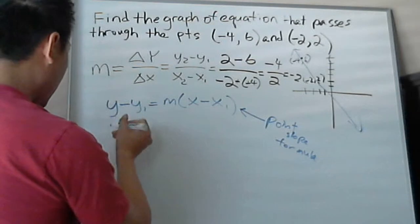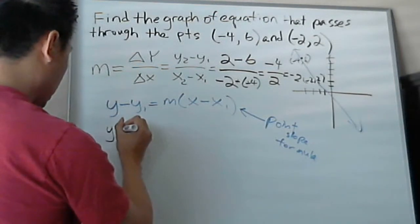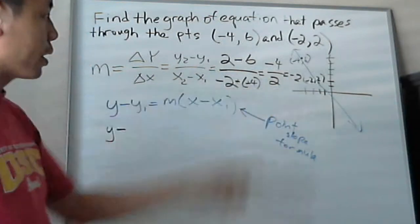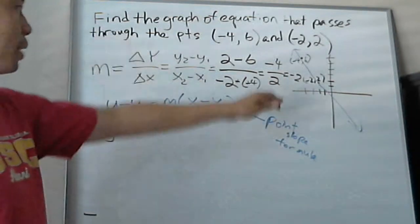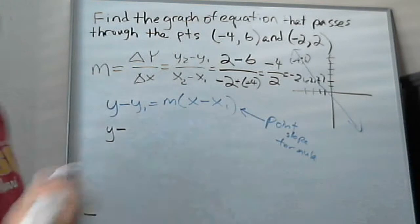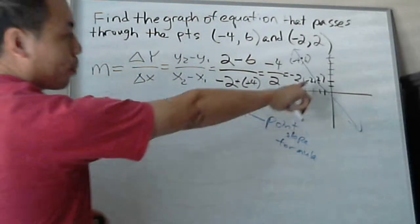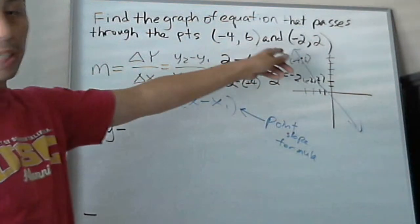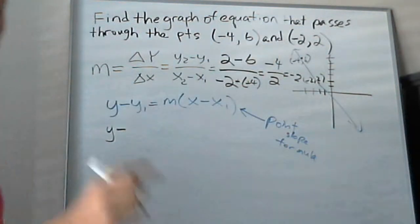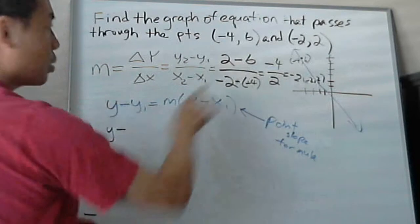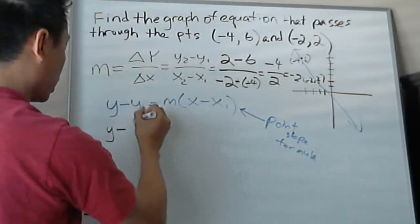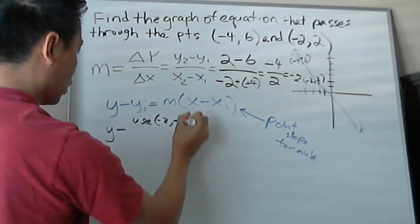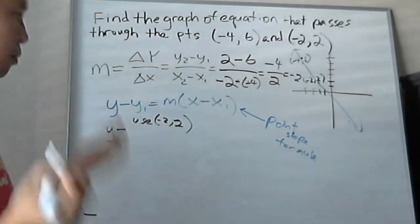So it'll be y minus. You can choose either point. I mean, you know both points are on this graph. So I generally like the smaller numbers and no fractions. It means it's easier to calculate. So let me pick this point. You can pick this one too. You'll see it's the same answer. No matter if you use negative 4, 6 here or negative 2, 2 here, you're gonna get the same answer. So let's do the 2, 2 one. We're gonna use negative 2, 2 as our point for here.